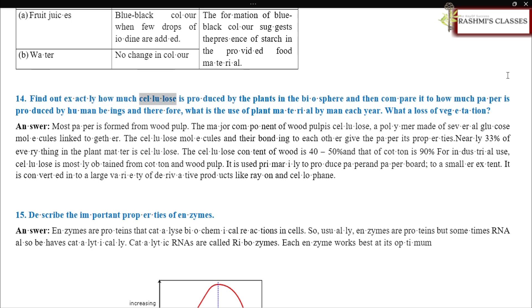Find out exactly how much cellulose is produced by the plants in the biosphere and then compare it to how much paper is produced by human beings and therefore what is the use of plant material by man each year. What a loss of vegetation. Answer. Most paper is formed from wood pulp. The major component of wood pulp is cellulose, a polymer made of several glucose molecules linked together. The cellulose molecules and their bonding to each other give the paper its properties. Nearly 33% of everything in the plant matter is cellulose. The cellulose content of wood is 40-50% and that of cotton is 90% for industrial use. Cellulose is mostly obtained from cotton and wood pulp. It is used primarily to produce paper and paperboard. To a smaller extent, it is converted into a large variety of derivative products like rayon and cellophane.